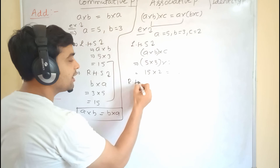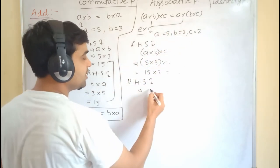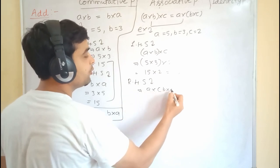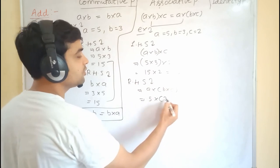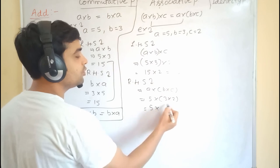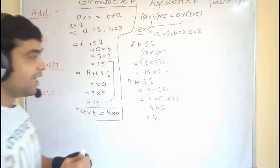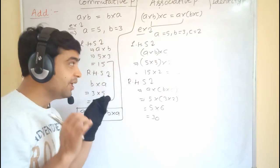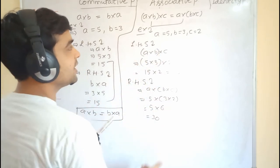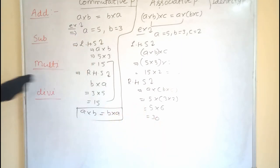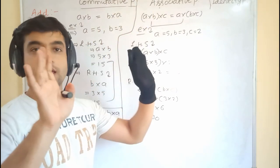For RHS, we calculate a into (b into c), which is 5 into (3 into 2). Solving the bracket first: 3 into 2 is 6, then 5 into 6 is 30. Both LHS and RHS are equal — both are 30 — which means multiplication is following associative property.